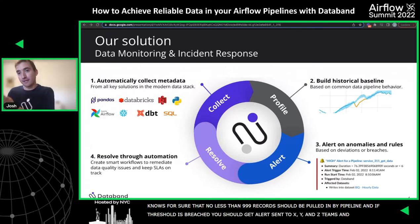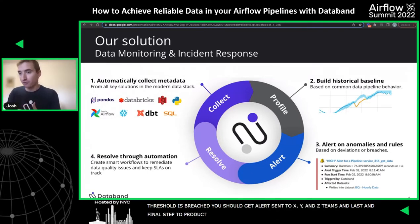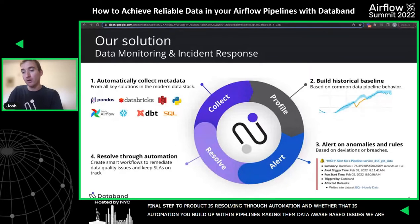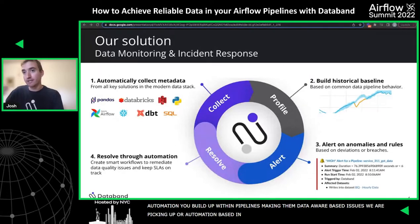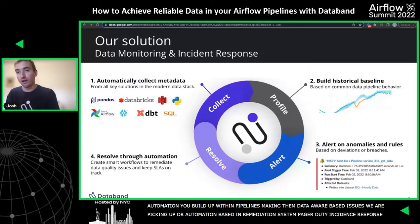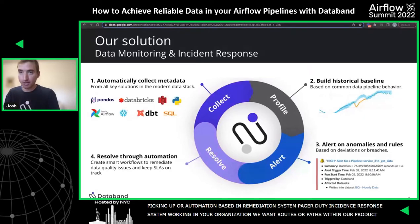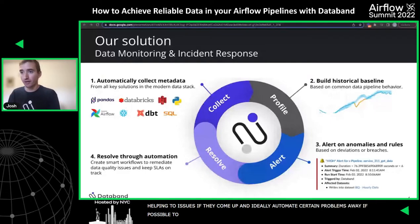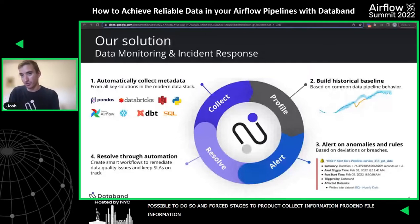The last step to our product is resolving through automation — whether that's automation built into your pipelines that makes them more data-aware, or automation based in your remediation system like PagerDuty. We want to have routes within our product that help close issues when they come up and ideally automate certain problems away. So the four stages to our product are: we collect information, we profile that information, we alert on it, and then we help in the resolution after the fact.